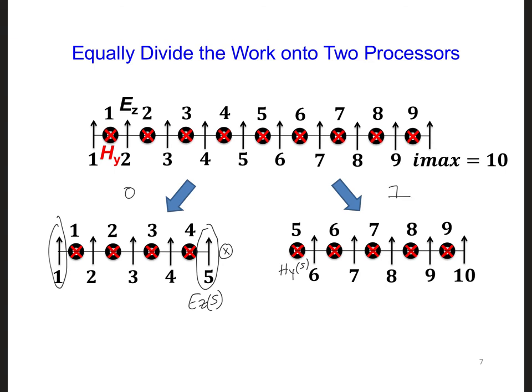So this means that before the EZs are updated, we need to make sure that processor 1 sends the value of HY5 from the previous half-time step over to processor 0.